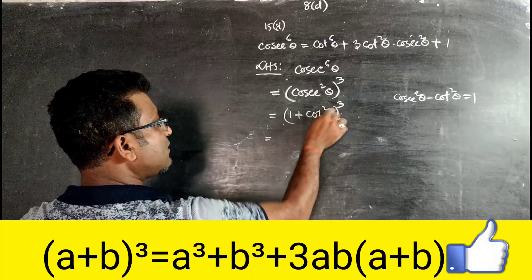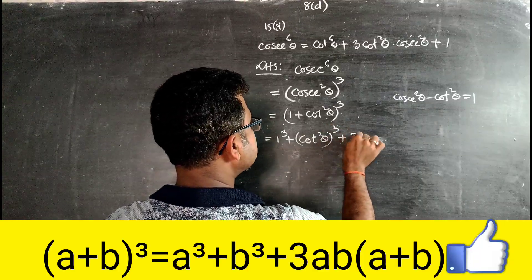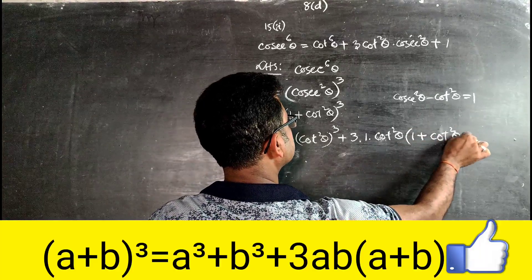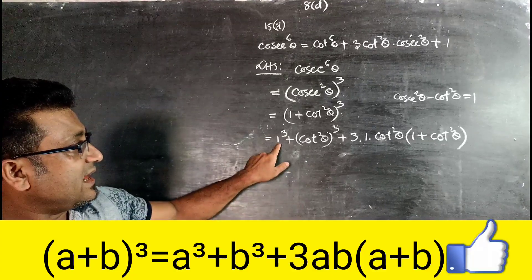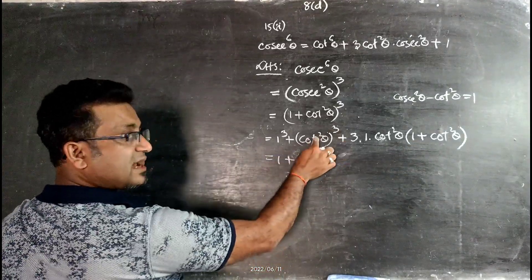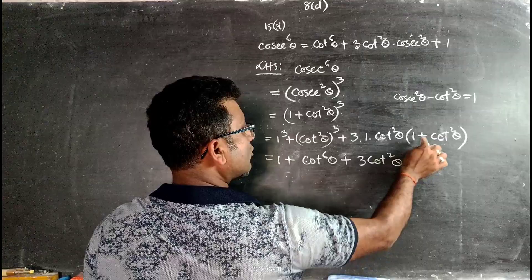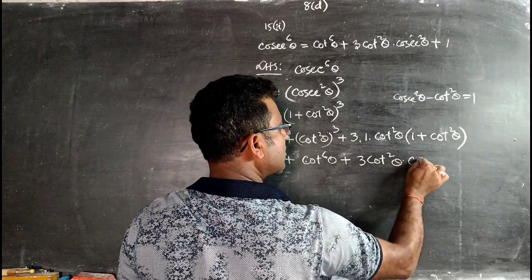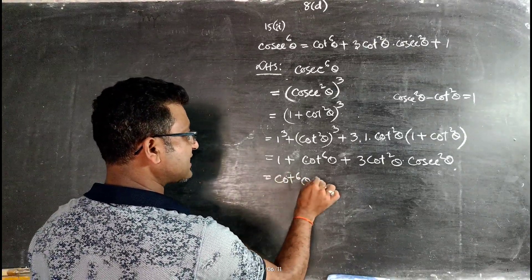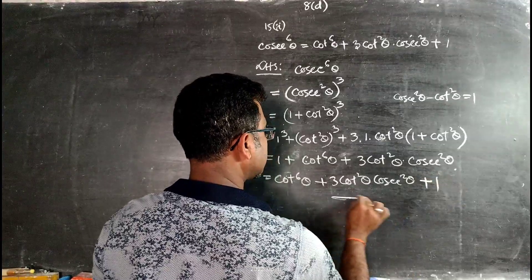Expanding (1 + cot²θ)³ using (a + b)³ = a³ + b³ + 3ab(a + b): we get 1 + cot⁶θ + 3cot²θ·(1 + cot²θ). Since 1 + cot²θ = cosec²θ, this gives cot⁶θ + 3cot²θ·cosec²θ + 1, which is the required right hand side.